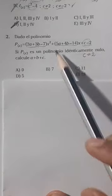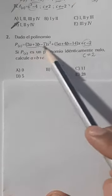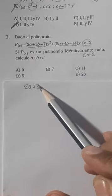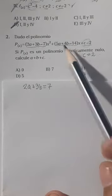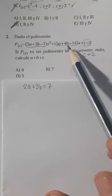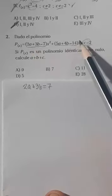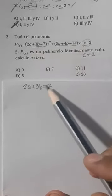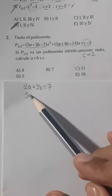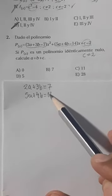C vale 2. Este también va a ser igual a 0. Por lo tanto, podemos decir 2A más 3B menos 7 es igual a 0, y el 7 lo pasamos al otro lado con signo positivo. Recuerda que los coeficientes de los términos tienen que ser 0 para que todo te salga 0 y así sea un polinomio idénticamente nulo. También lo igualamos a 0 y nos quedaría 5A más 4B es igual a 14.